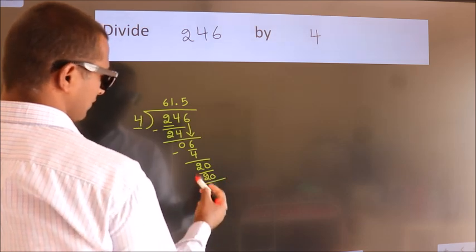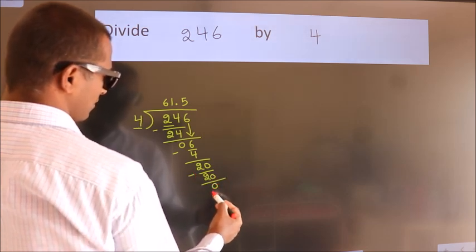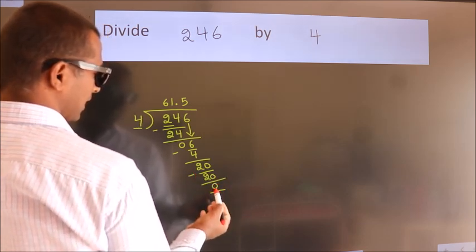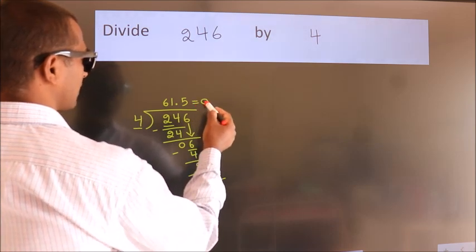Now we subtract, we get 0. We got remainder 0. So this is our quotient.